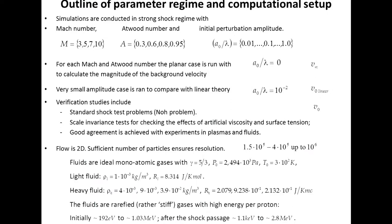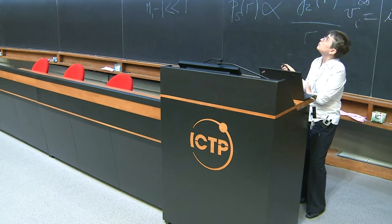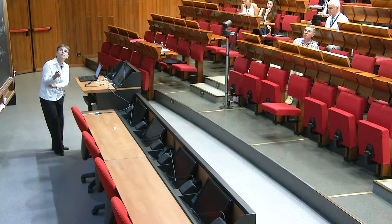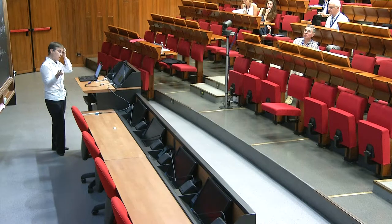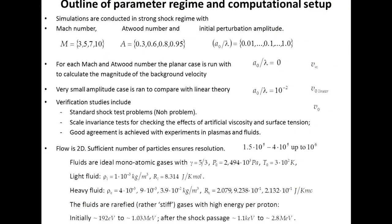The parameter regimes we worked in for strong shock-driven cases included Mach numbers 3, 5, and 10; Atwood numbers from 0.3 to 0.95, meaning density ratios from roughly 1:3 to 1:40; and initial perturbation amplitudes from a planar interface up to 100% of the wavelength. We conducted additional runs for planar and very small amplitude interfaces, and performed extensive validation and verification including standard shock and Noh problems, compared with experiments and achieved good agreement. Typical particle counts in simulations were 10^5, which was a sufficient number for accuracy.